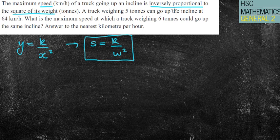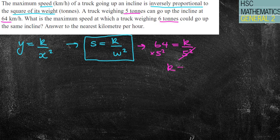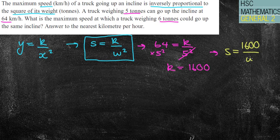A truck weighing five tonnes goes up the incline at 64 kilometres an hour. What is the maximum speed of a six-tonne truck? I need to find k. 64 equals k over 5 squared. The opposite of divided by 5 squared is times by 5 squared. So k equals 64 times 25, which equals 1600. I'll rewrite the formula: s equals 1600 over w squared. That is my equation of variation.